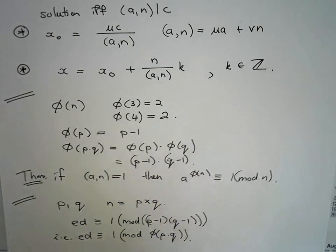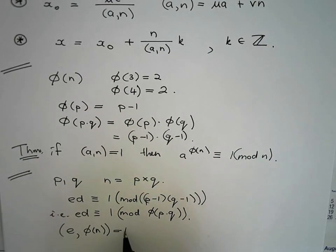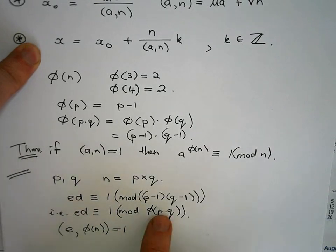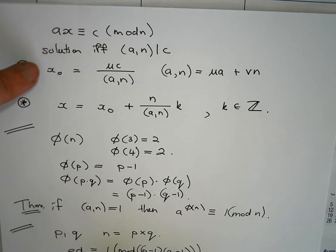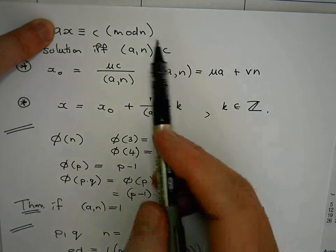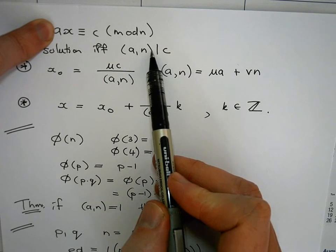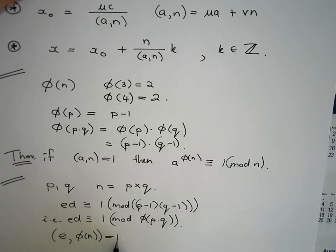So if I choose my E to be relatively prime to phi of N, then, relatively prime means the GCD is equal to 1. Then, if we go back over here, so this is my E, the GCD of this guy and this guy is 1. So if we go back to those basic facts about linear congruences, we see, this is my E, this is my N, and we're saying they are relatively prime, so their GCD is 1. So that 1 will definitely divide the 1, which in this case is our C. So we will have a solution.